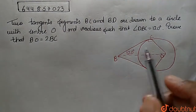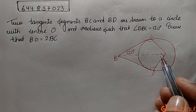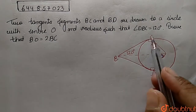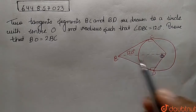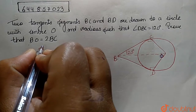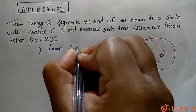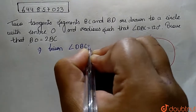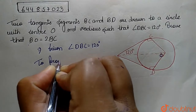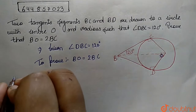The question here is: two tangent segments BC and BD are drawn to the circle with center O and a given radius, such that angle DBC equals 120 degrees. We have to prove that BO equals two times BC.